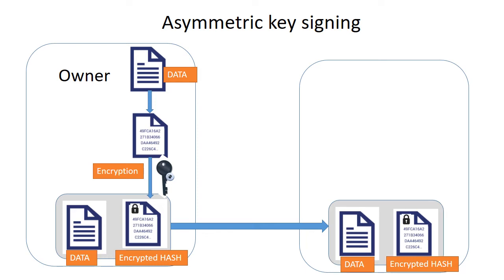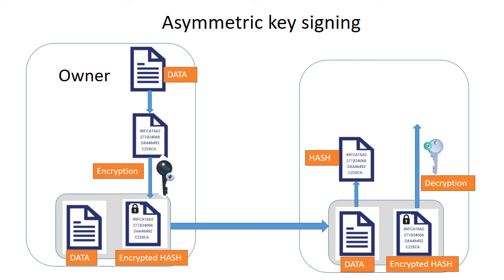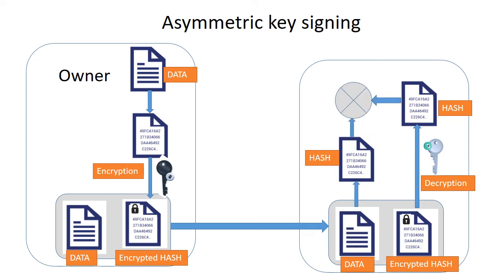This other party must be sure that the data was sent from the owner, and that's why it verifies the data in the following way: it takes the same data, applies the same hash function, and creates a hash. Then the hash that was sent by the owner — which was encrypted with the private key — is decrypted using the owner's public key. After that, it compares those two hashes, and if the hashes match,